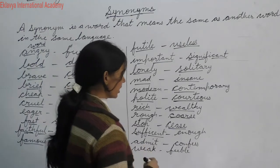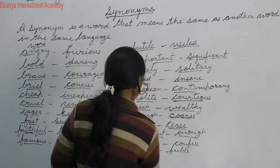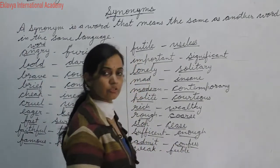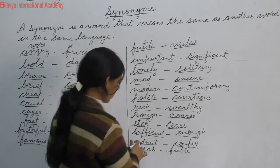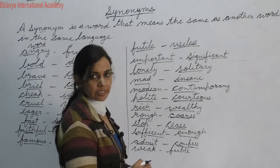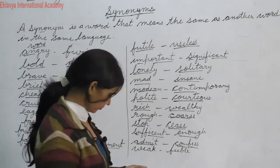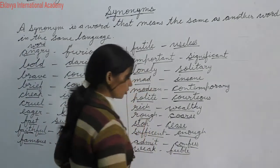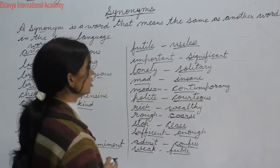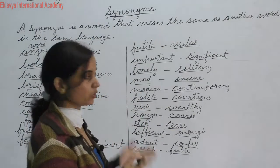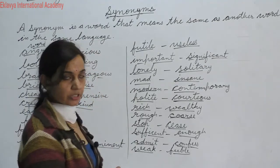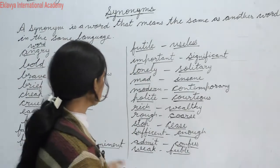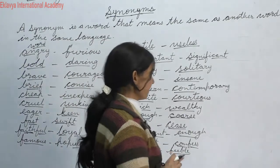Sufficient means enough — same meaning. Admit means kisi cheez ko swikar karna, confess karna — like if you admit your mistake, you can say I have admitted my mistakes, maine apni mistake swikar kar li. Weak means kamzor and feeble also means kamzor. These are some synonyms — write them in your notebook in good handwriting and learn them.